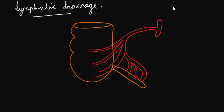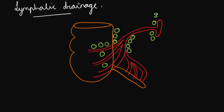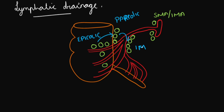The lymphatic drainage of the large intestine: first, epicolic lymph nodes present in the walls of the gut drain into paracolic lymph nodes, which are present along the ascending and descending colon. From there, lymph drains into intermediate lymph nodes, which are present along the blood vessels. Finally, lymph drains into the terminal lymph nodes, which are present near the superior mesenteric artery or inferior mesenteric artery.